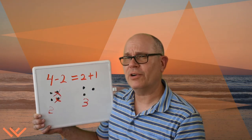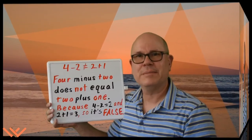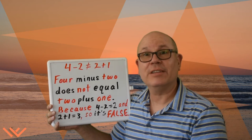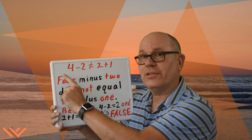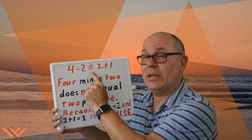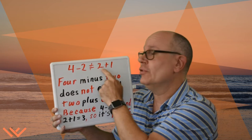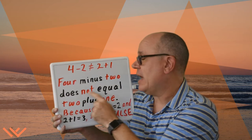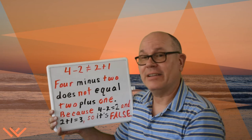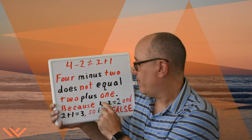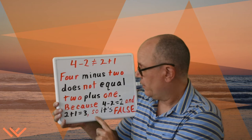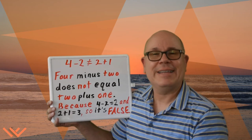I'd say Kit was correct. This is false. But how do we write out the reasoning? Here are the words I use to write out why Kit is correct when she says the equation was false. First I start out: 4 minus 2, and I have a slash through the equal sign — that means does not equal — 2 plus 1. 4 minus 2 does not equal 2 plus 1. Because 4 minus 2 equals 2, and 2 plus 1 equals 3. So it's false, and Kit is correct.